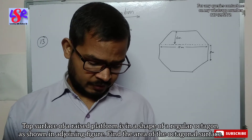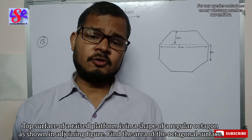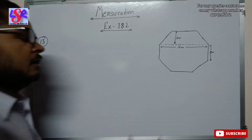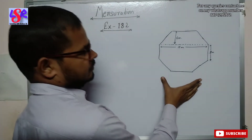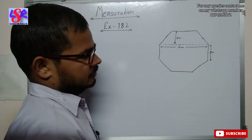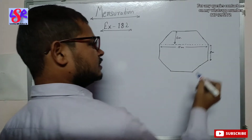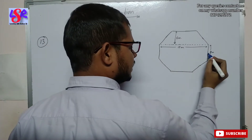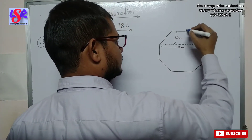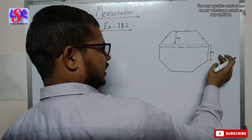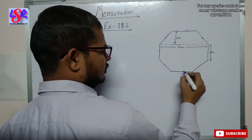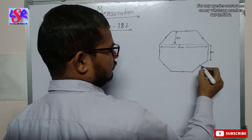We have to find the area of the octagonal surface. We have this figure which is a regular octagon. Regular octagon means all of the sides are of equal length. So if one side is 8 meters, then all of them will be 8 meters.